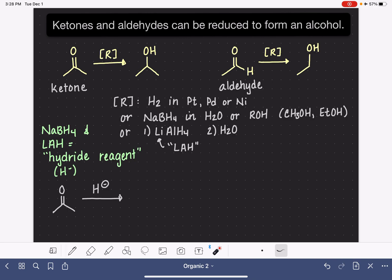So if we're drawing the mechanism, instead of writing out NaBH4 or writing out LiAlH4, we're just going to begin by writing the H minus ion because it is the thing that's actually doing the reaction. The H minus ion attacks the carbon of the carbon-oxygen double bond, and it causes that carbon-oxygen double bond to open up.